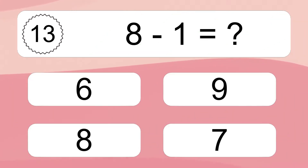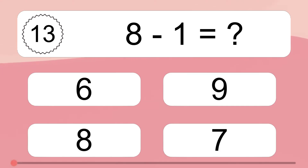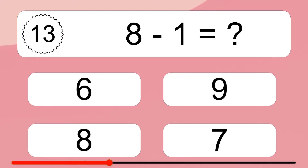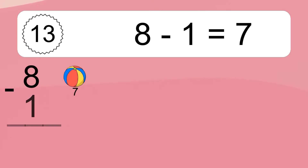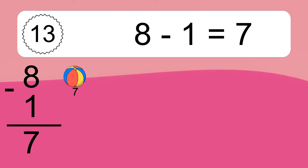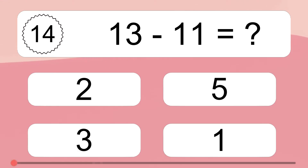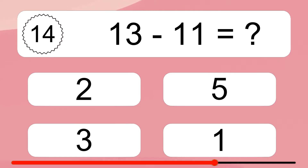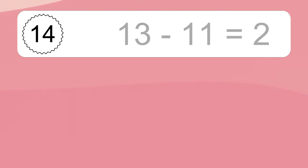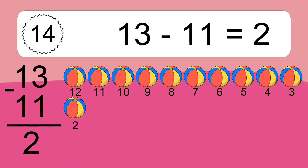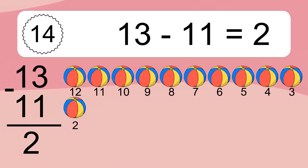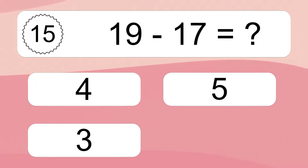8 minus 1 equals what? 8 minus 1 equals 7. Let's count it: 7. 13 minus 11 equals what? 13 minus 11 equals 2. Let's count it: 12, 11, 10, 9, 8, 7, 6, 5, 4, 3, 2.